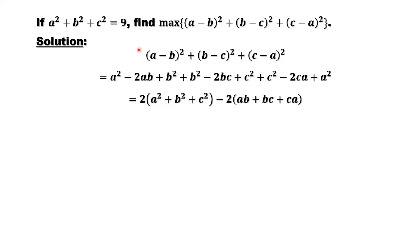What is this? This is given, it's 9. And minus 2ab minus 2bc minus 2ca, we can factor 2 outside with a negative sign. Then you have ab plus bc plus ca.